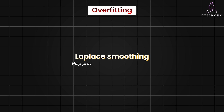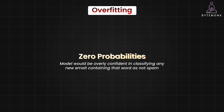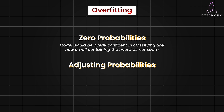Smoothing techniques like Laplace smoothing help prevent overfitting in Naive Bayes models in a couple of ways. Without smoothing, if a word doesn't appear in the training data for a particular class — for example, 'inheritance' in spam emails — its probability would be zero. This means the model would be overly confident in classifying any new email containing that word as not spam. Smoothing assigns a small non-zero probability to unseen words, preventing overconfidence and allowing the model to consider other evidence. Smoothing also adjusts the probabilities of words that do appear in the training data, reducing the impact of very frequent words and helping the model focus on broader patterns that distinguish spam from non-spam, rather than memorizing specific examples.